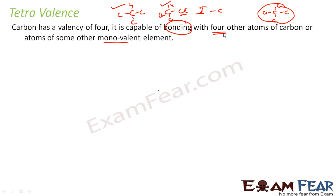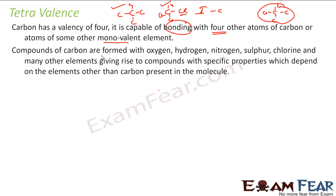Carbon forms compounds with oxygen, hydrogen, nitrogen, sulfur, chlorine, and many other elements, giving rise to compounds with specific properties. These properties depend on the other elements — for example, when carbon bonds with oxygen, the compound's property depends more on oxygen; when it bonds with hydrogen, the property depends on hydrogen. So the compounds formed from carbon mixed with these elements have different properties depending on those elements.